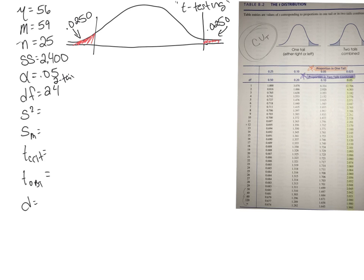And then we use our tcrit table over here, or critical value of t. I use tcrit, you can use CVT for critical value of t. And you go .05 two tail, so we're going to be in this part right here. And degrees of freedom equals 24, which gives us a tcrit, or critical value of t, of plus or minus 2.064.